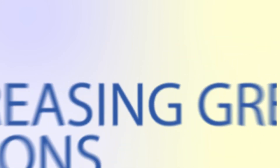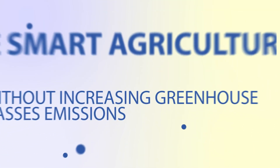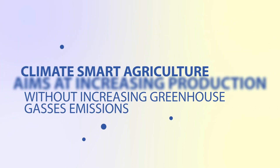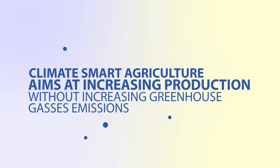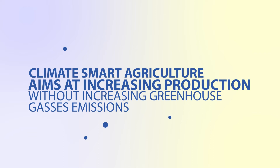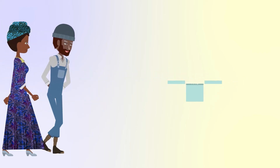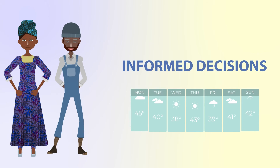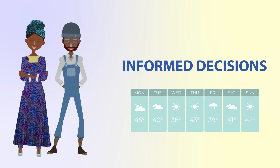Climate Smart Agriculture aims at increasing agricultural production to meet the needs of the growing demand for food from an increasing population, and where possible reducing greenhouse gases. It calls upon farmers to make decisions on farm operations that are informed by weather information.